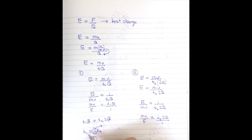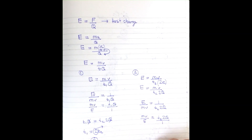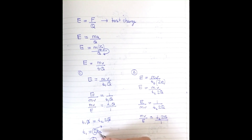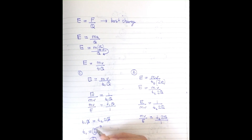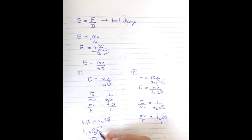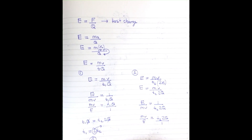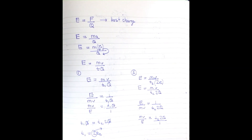So t2 is two times the proton time t1, where t1 is the proton time and t2 is the helium nucleus time. Therefore the answer is option B.